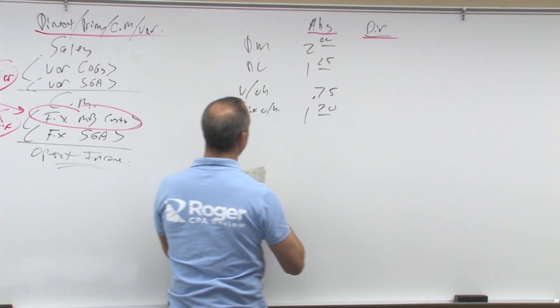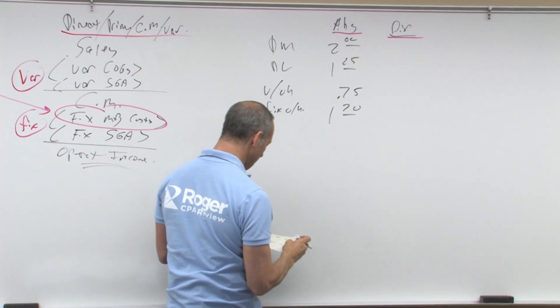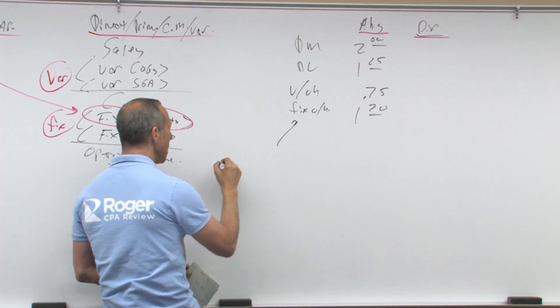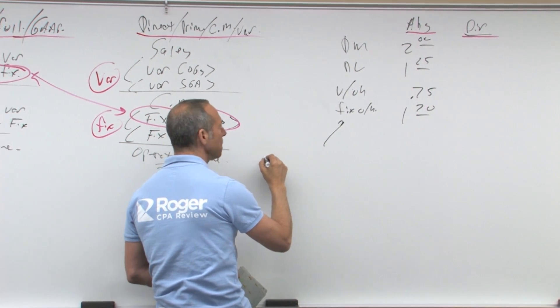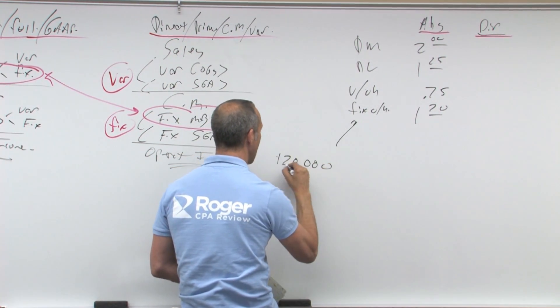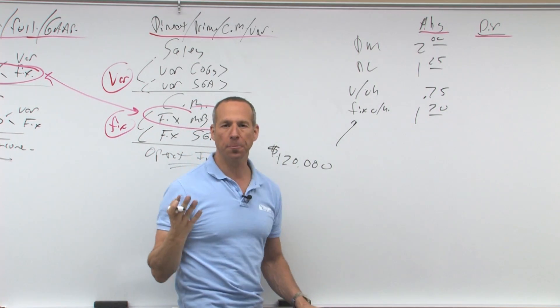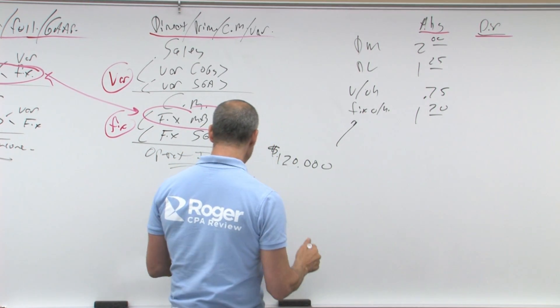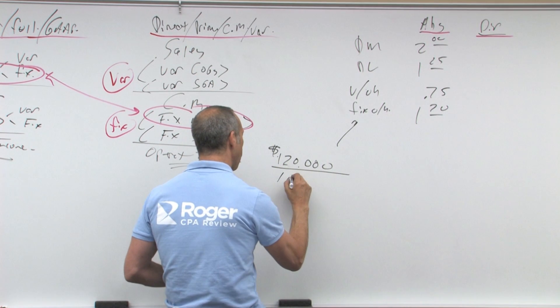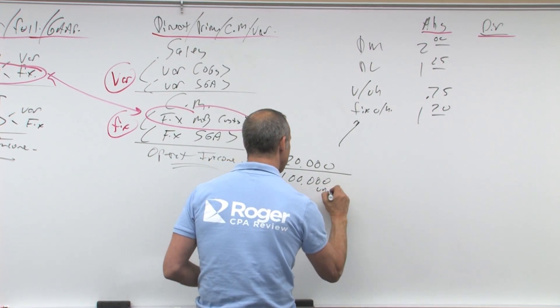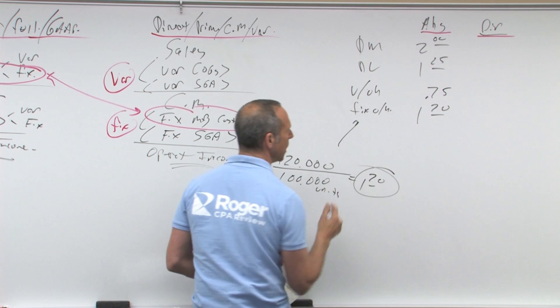This is for absorption purposes. Now, where did this fixed overhead come from? Let's pretend that my fixed overhead is $120,000 a year. Maybe it's rent. Now, I am going to manufacture 100,000 units. That equals $1.20 a unit.